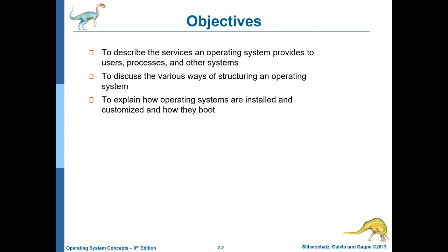First, we described the operating system as a software which provides services — to users, to processes, and to other systems. We will discuss the various ways to structure the operating system, and we will see different examples of operating systems and how they are different from one another.